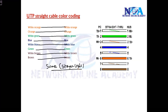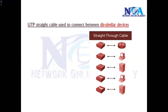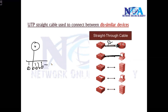It depends how you insert the wires inside the jack — that makes it a straight cable. The straight cable is used to connect dissimilar devices. If you're connecting a switch to a router, use a straight cable. Switch to PC, use a straight cable. Switch to switch uses a cross cable.